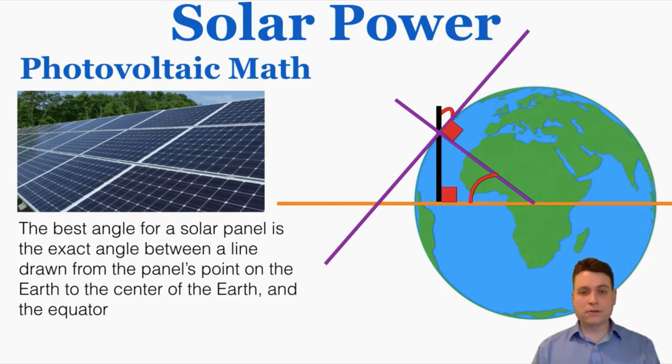You can actually prove using geometry that the best angle for a solar panel is the exact angle between a line drawn from the panel's point on the earth to the center of the earth and the equator. So that's pretty cool, the farther north from the equator you go, the more you will need to angle solar panels up to get a perfect 90 degree angle with the sun. If you were looking for another reason why we know that the earth is round, this is another reason.